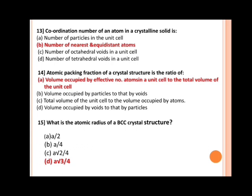Next, atomic packing fraction of a crystal structure is the ratio of. Options are: a) volume occupied by effective number of atoms in a unit cell to the total volume of the unit cell; b) volume occupied by particles to that by voids; c) total volume of the unit cell to the volume occupied by atoms; d) volume occupied by voids to that by particles. Our correct answer is a, volume occupied by effective number of atoms in a unit cell to the total volume of the unit cell.